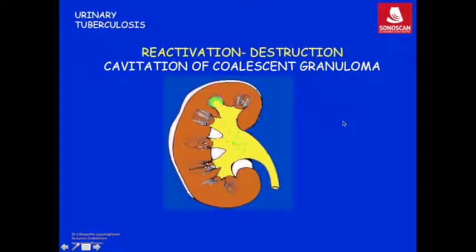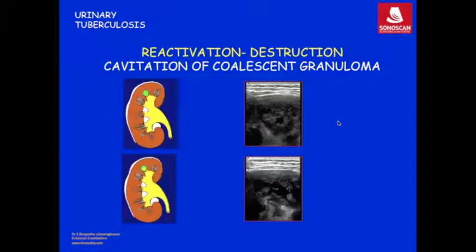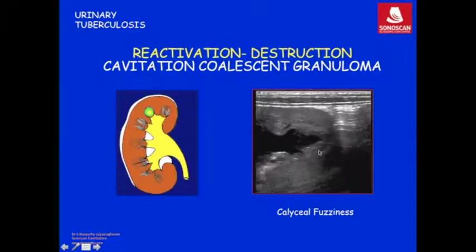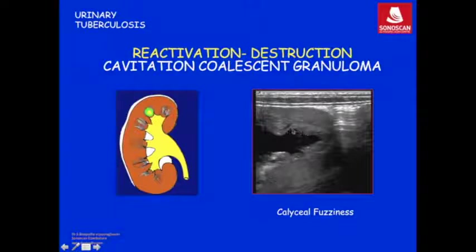In the coalescent granuloma, necrosis happens in the centre and forms a cavity. That cavity erodes into the calyx and the infection spreads to the urothelium. So this is a coalescent granuloma where necrosis forms a cavity, and if the papillary cavity is close to a calyx, that causes fuzziness of the calyx on IVP.